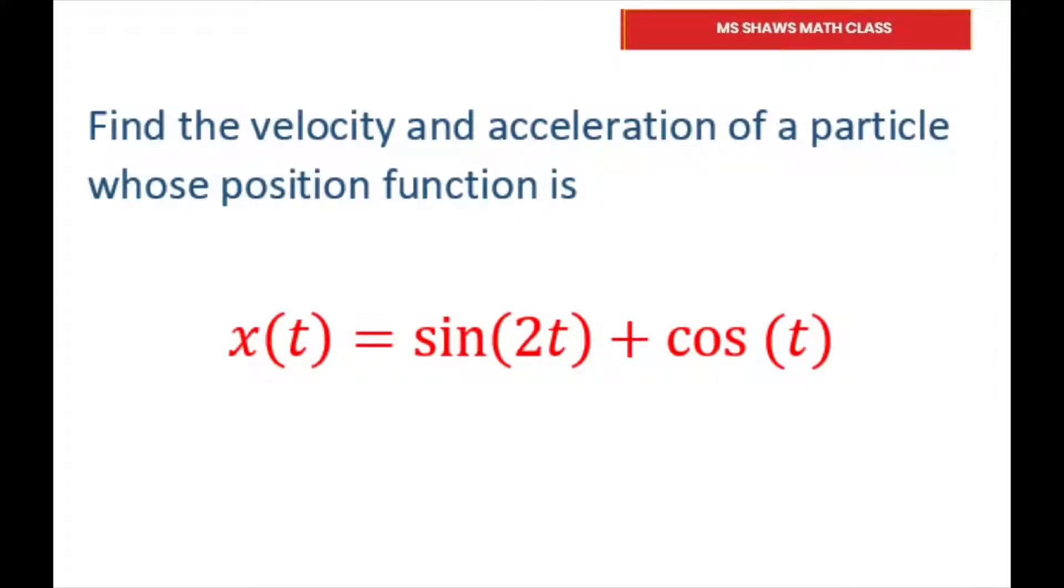And basically all we're doing is taking the first and second derivative of this. So position is just x of t, which was, let's see, I forgot what it was. Okay, it is sine 2t, it's your double angle here, plus cosine of t. Sorry about that.